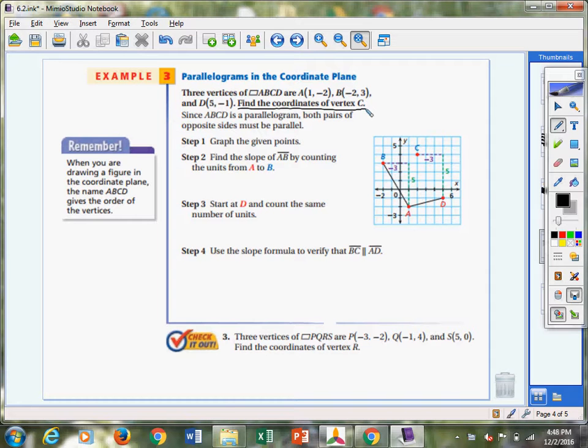So the assumption is, if they're telling us it's a parallelogram, then the opposite sides must be parallel to each other. So step one, they already did it for you, so you're going to graph the given points.